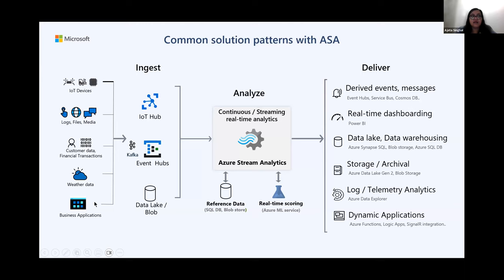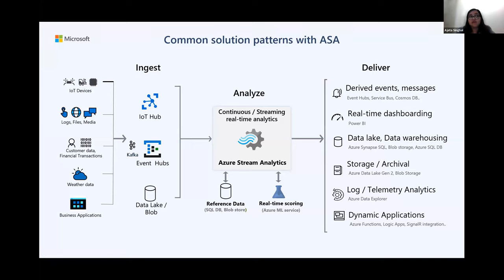Real-time data can be ingested into Azure via IoT Hub, Event Hub, Data Lake, or Blob. Event Hub has support for Kafka endpoints, so even if you have data in Kafka, you can get it into Event Hub. Once data is in Event Hub or IoT Hub, Azure Stream Analytics can take that data and analyze it in real-time. You can also combine it with reference data from SQL DB or Blob, or bring in Azure ML models for real-time scoring.